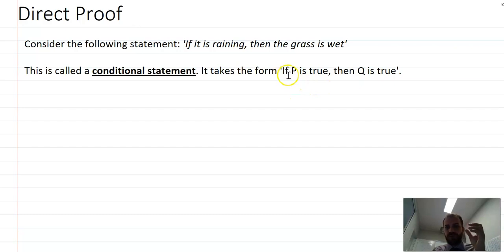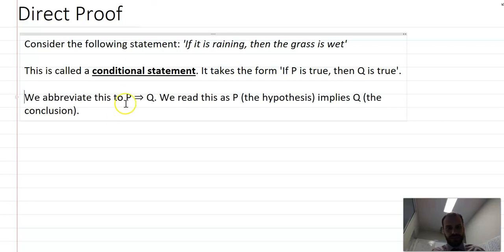So if it is raining, which is P, if that is true then Q, the grass is wet, will also be true. We can abbreviate that mathematically, and that just looks like P with this little arrow, and the way that you read that is P implies Q. So, it is raining implies the grass is wet. P implies Q.